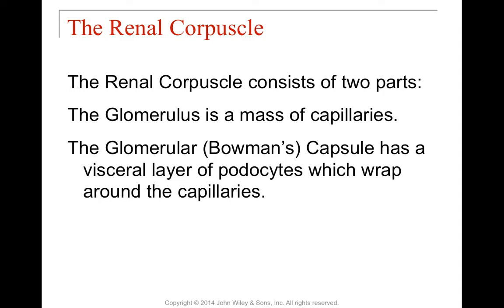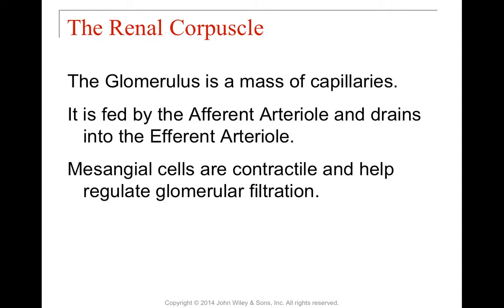The glomerulus is a little capillary bed tucked inside the Bowman's capsule. Bowman's capsule has a layer of specialized cells called podocytes that wrap around those capillaries and allow filtration to occur. The glomerulus is fed by the afferent arteriole and drains out to the efferent arteriole. The whole purpose is glomerular filtration. We also have specialized contractile mesangial cells that help regulate the filtration rate.